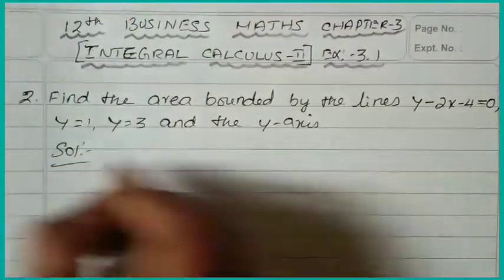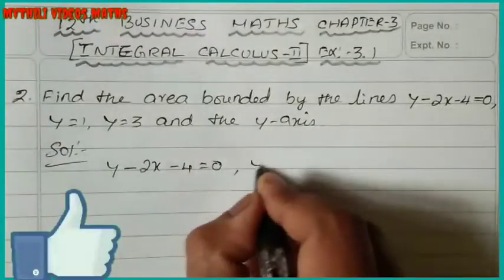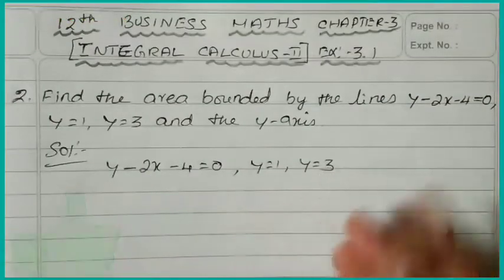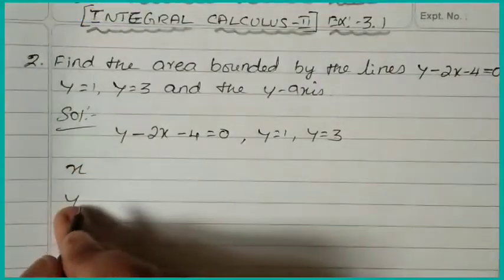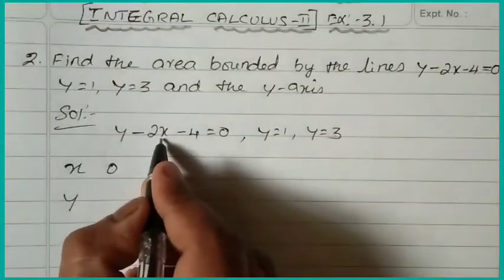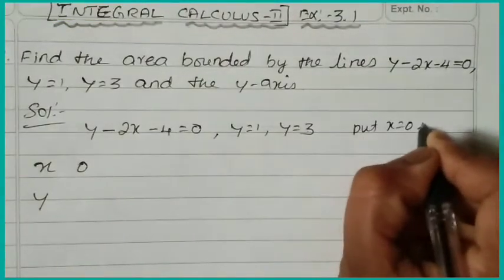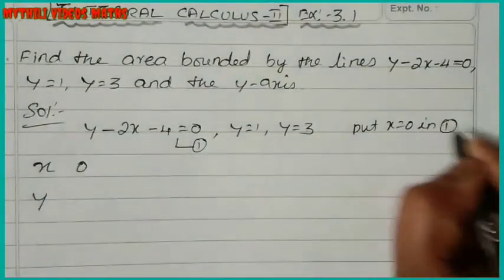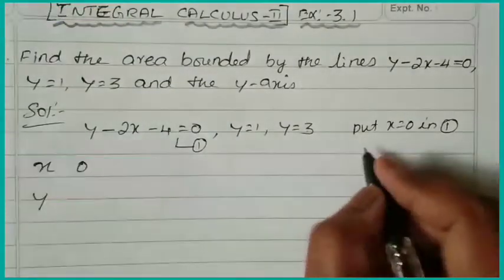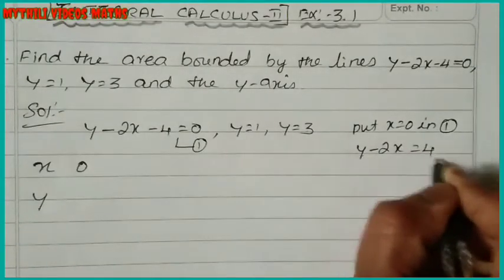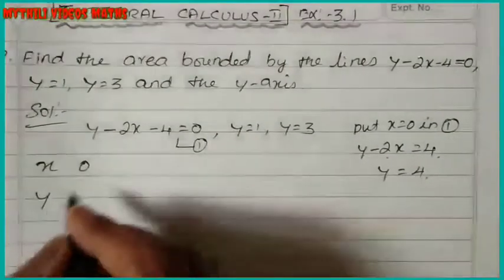Now we have to work with the equation y minus 2x minus 4 equal to 0. We set up a table of x and y values. First, put x equal to 0. Rearranging the equation gives y minus 2x equal to 4. Substituting x equal to 0, we get y equal to 4.